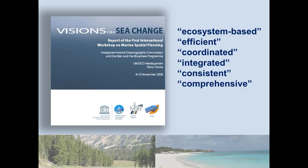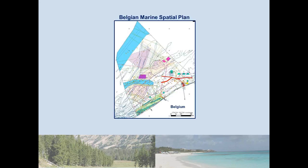At that time, marine spatial planning was just starting to be practiced in a few countries. Belgium was one of the first — that's a picture of Belgium's EEZ, with a map of their plan showing how they might fit all activities into their space. There are zones for wind power, marine protected areas, shipping lanes, and areas for dredging sand, done primarily through a university-led process.